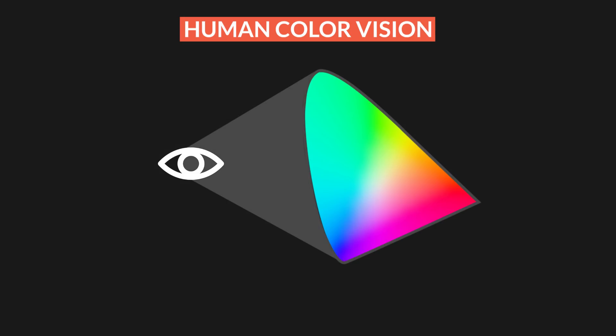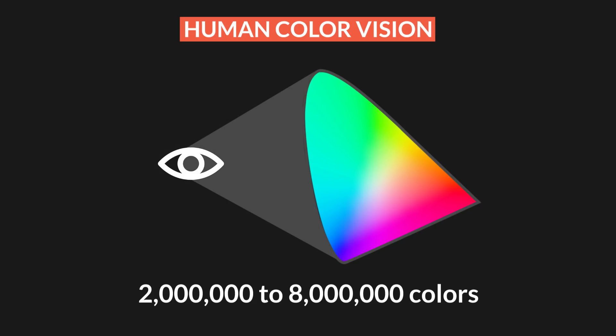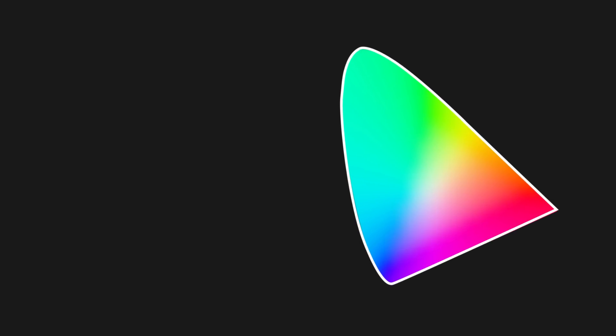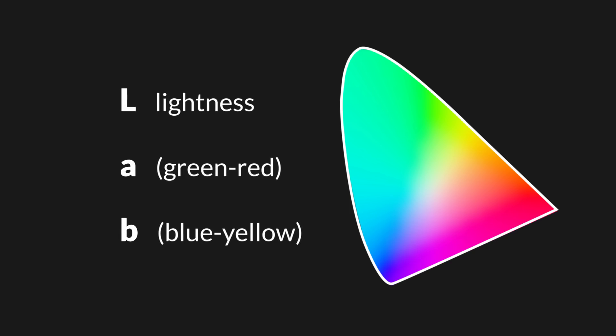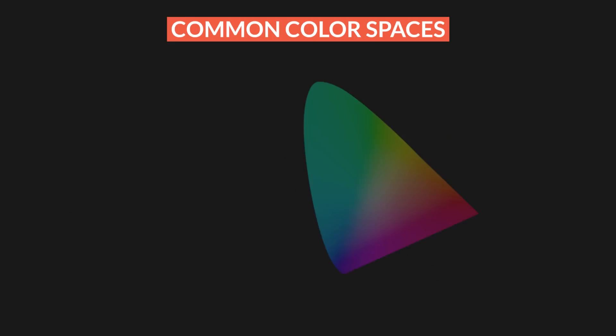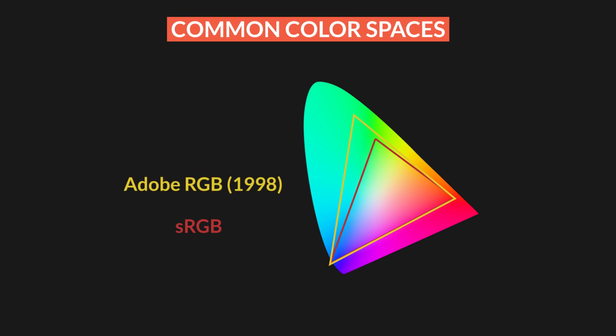Starting with some background information behind color spaces: the whole idea is that your eyes can capture a ton of colors — between two and eight million colors is the modern estimate. A mathematical equation captures all of the colors we could possibly see, and that's called the LAB model — Lightness, A, and B. From this model we're able to dictate smaller color profiles that are really good for different devices, such as sRGB, Adobe RGB 1998, and ProPhoto RGB.